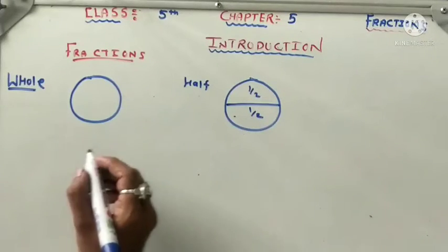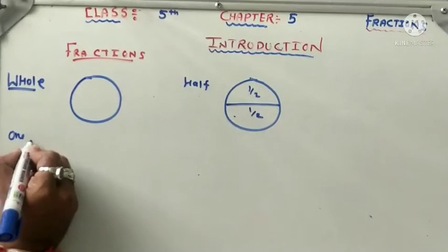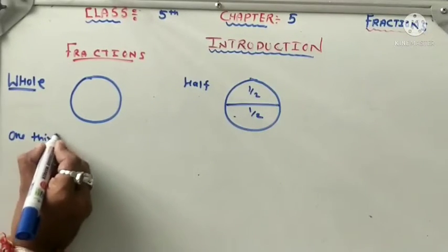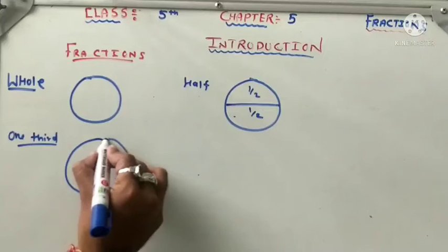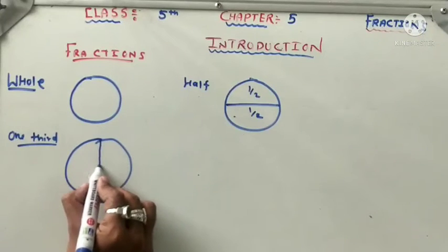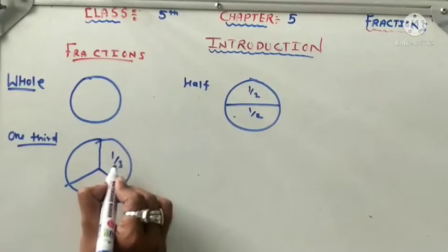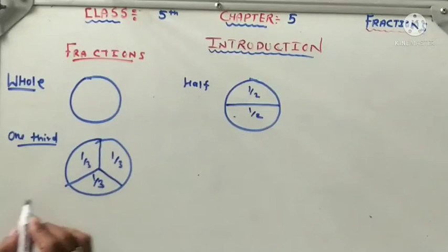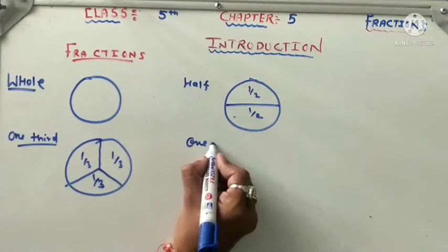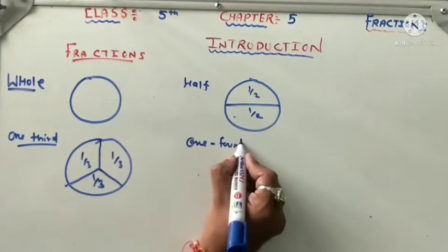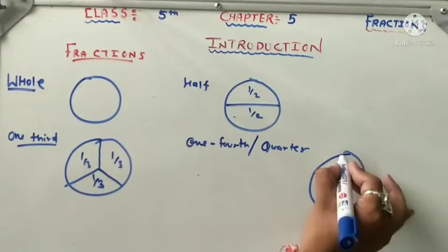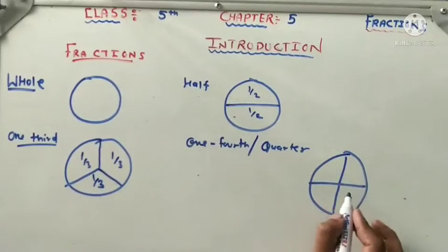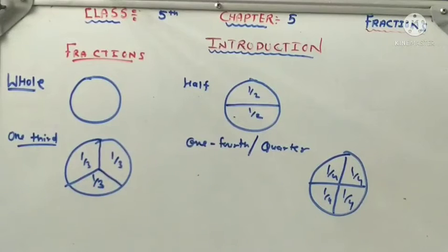Then one-third: the whole part is divided into three equal parts, each part is one upon three. Next, one-fourth, like a quarter: the whole part is divided into four equal parts, each part is one upon four.